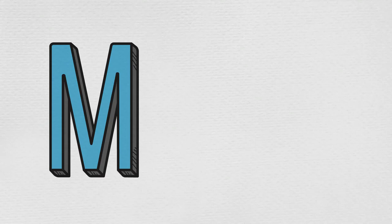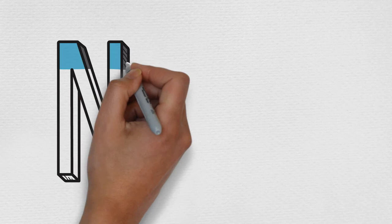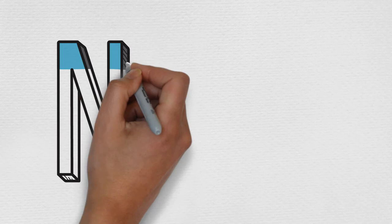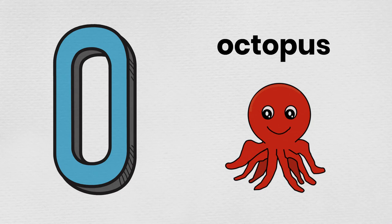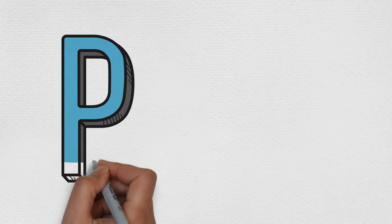M is for mouse. N is for newt. O is for octopus. P is for pigeon.